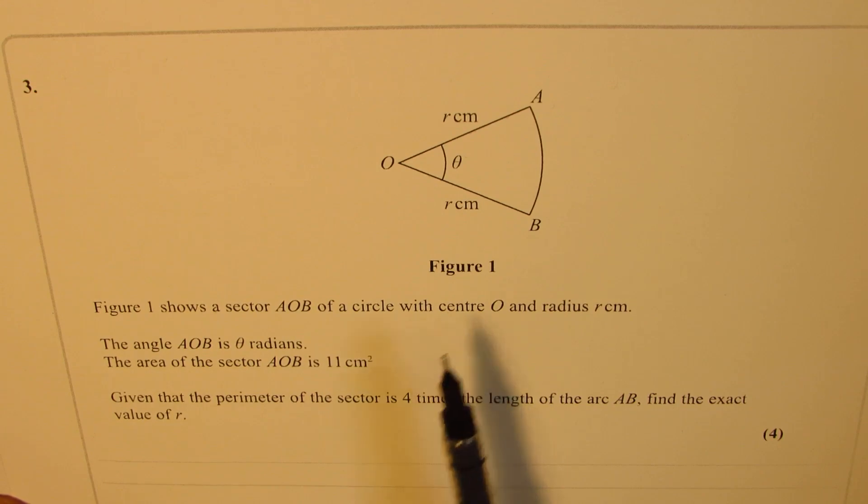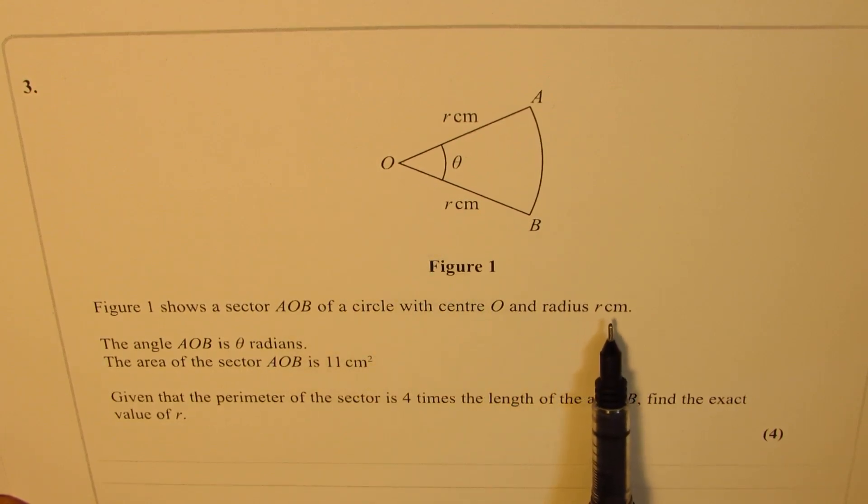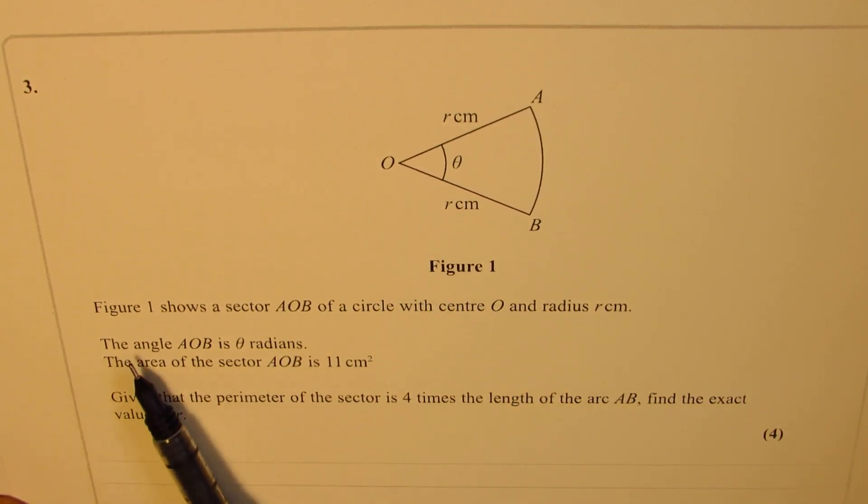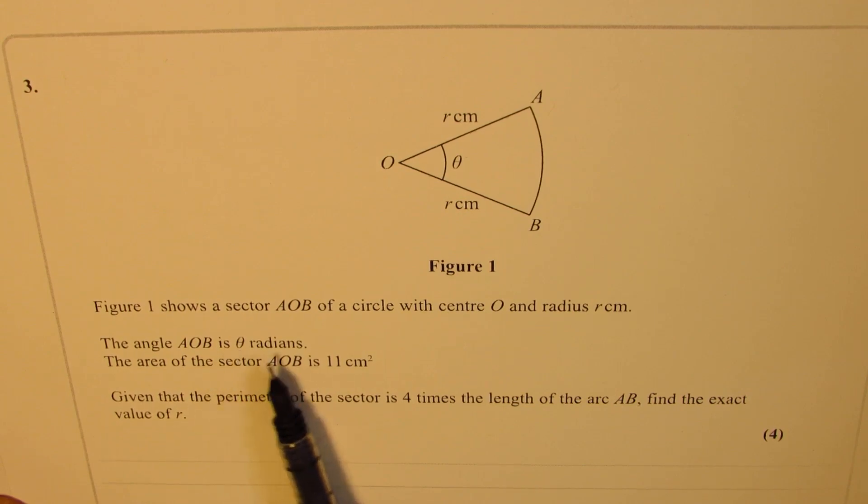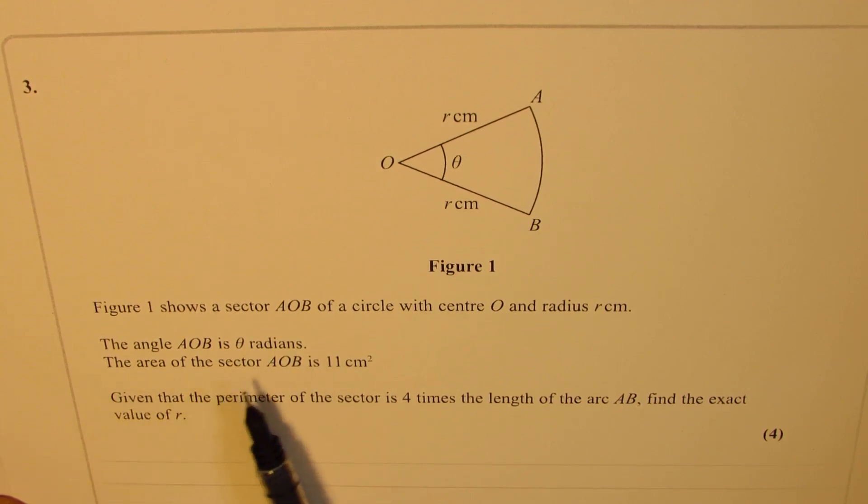of a circle with center O and radius r centimeters. The angle AOB is theta radians. The area of the sector AOB is 11 centimeters squared. Given that the perimeter of the sector is four times the length of the arc AB, find the exact value of r.